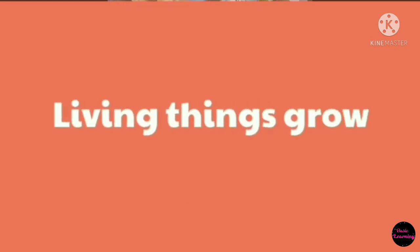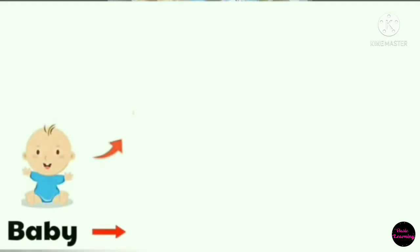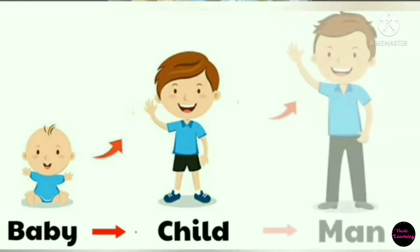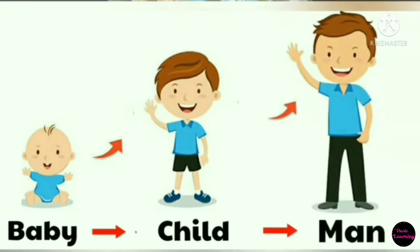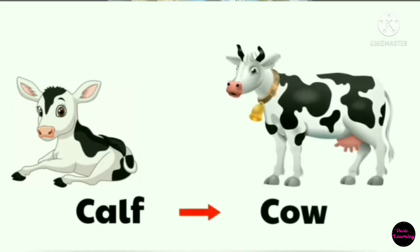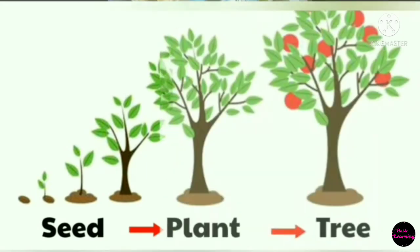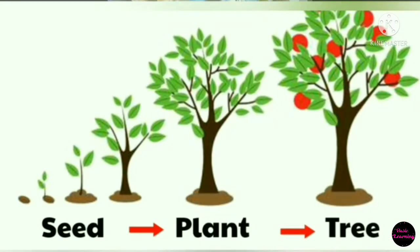Living things grow. A baby grows into a child, which then grows into a man. A calf grows into a cow. A seed grows into a plant, which then grows into a huge tree.